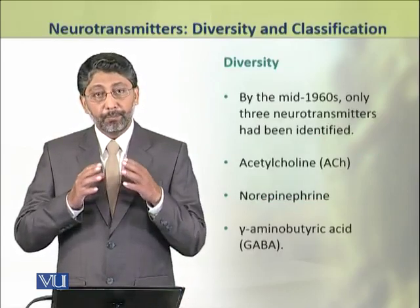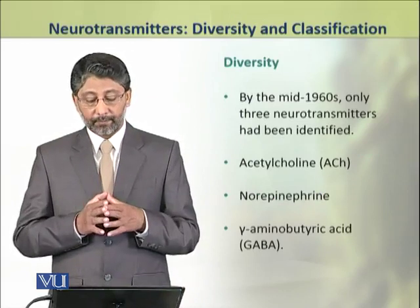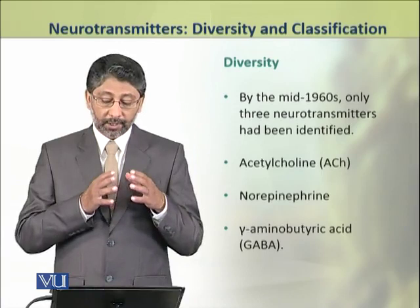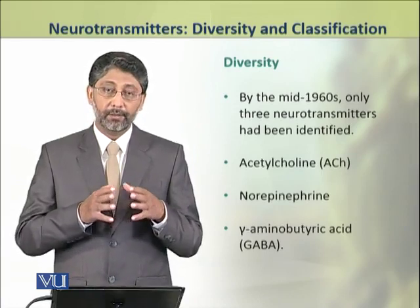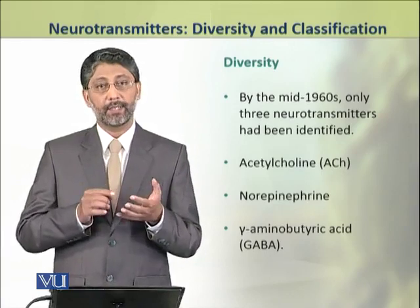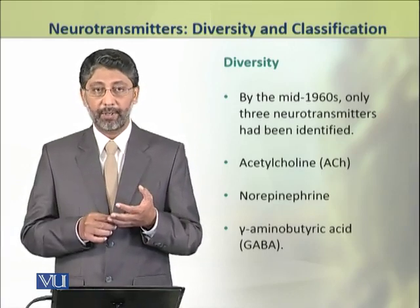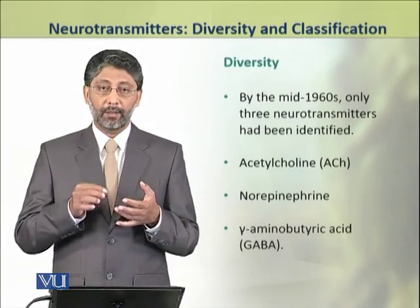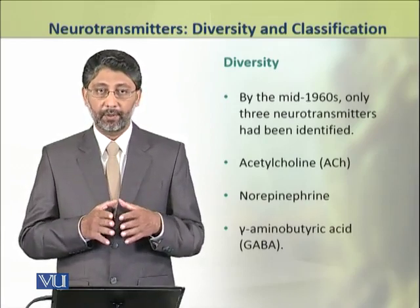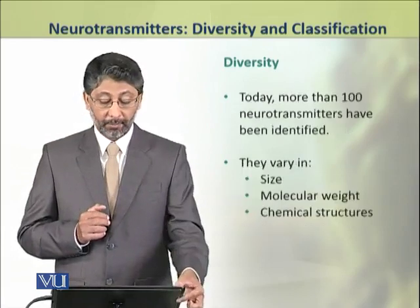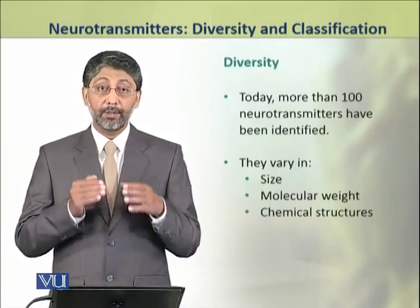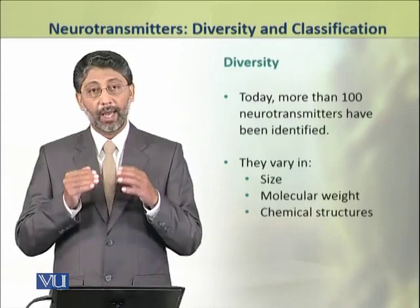By the mid-1960s, there were only three neurotransmitters that had been discovered and identified. These were acetylcholine, norepinephrine, and gamma-aminobutyric acid, commonly known as GABA. But now, more than 100 neurotransmitter molecules have been identified.